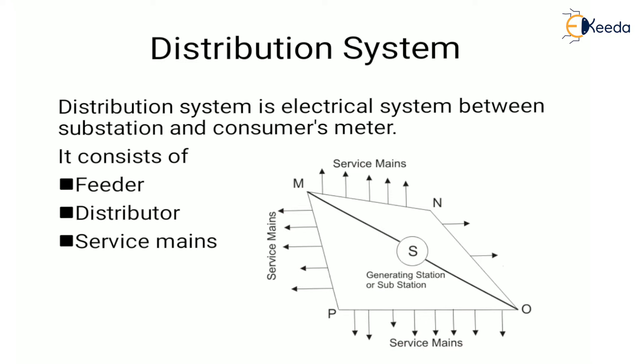The current through a distributor is not constant because of the tappings. Voltage along its length is the main consideration for the distributor, since the limit of voltage variation is plus or minus 5% of the rated value. Here MNO and MPO are distributors.